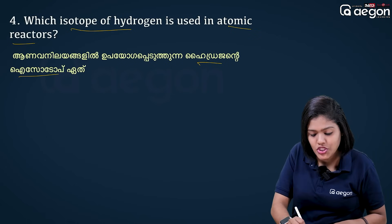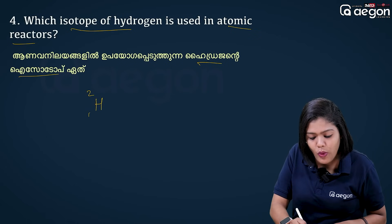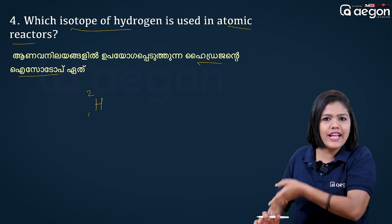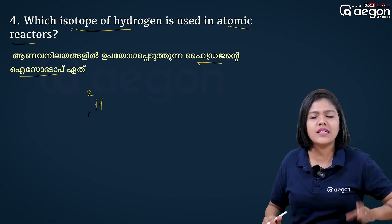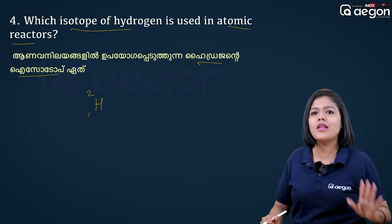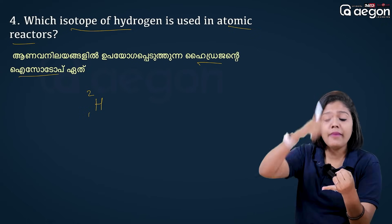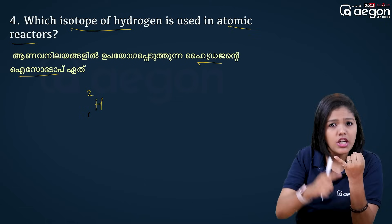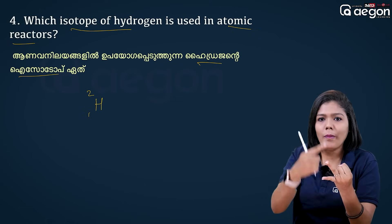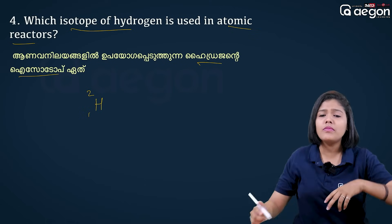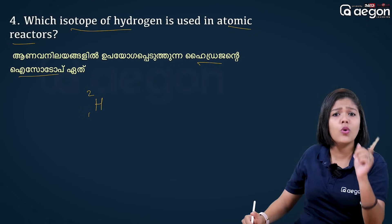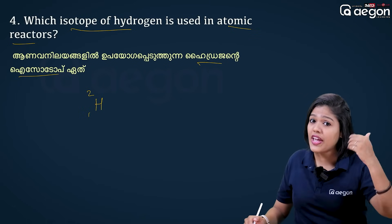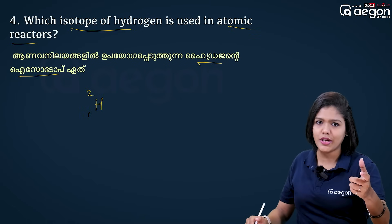H-1, H-2, H-3 — H-2 is deuterium. We use deuterium in atomic reactors. Uranium-235 is used as fuel. Cobalt and iodine are used in the medical field. Phosphorus isotopes are used as tracers. This is an important topic.